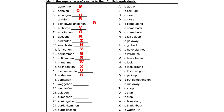Vorhaben is to have planned. Vorstellen is to introduce. Weggehen is to go away. Weglaufen is to run away. Zulegen is to add on. Zumachen is to close. Zurückgehen is to go back. Zurückkommen is to come back. And zurücklassen is to leave behind or to leave back.